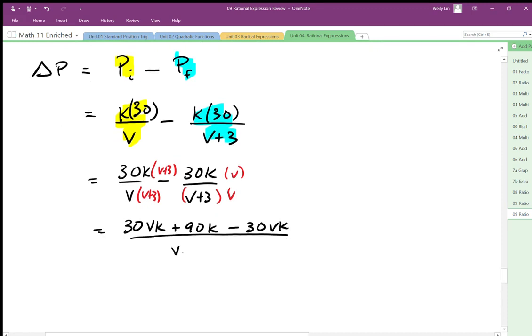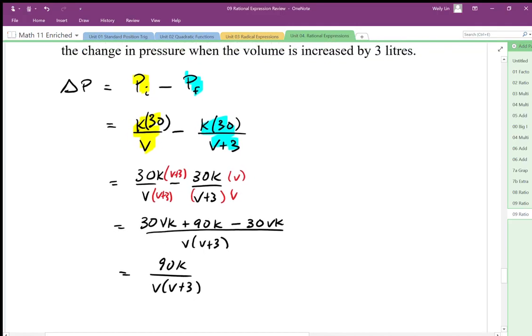We end up with V times V plus 3 in the denominator. So we end up with 90k over V times V plus 3. So there's the final expression for the change in pressure.